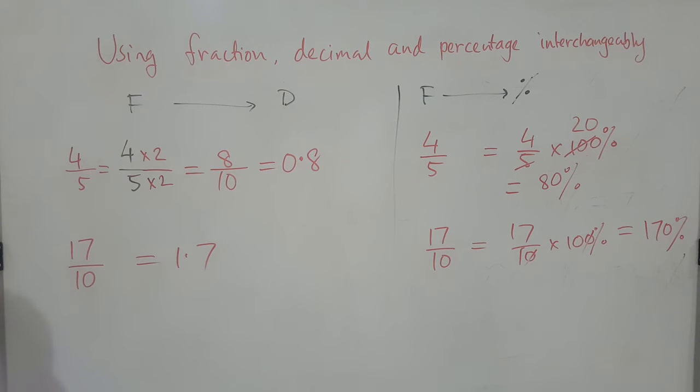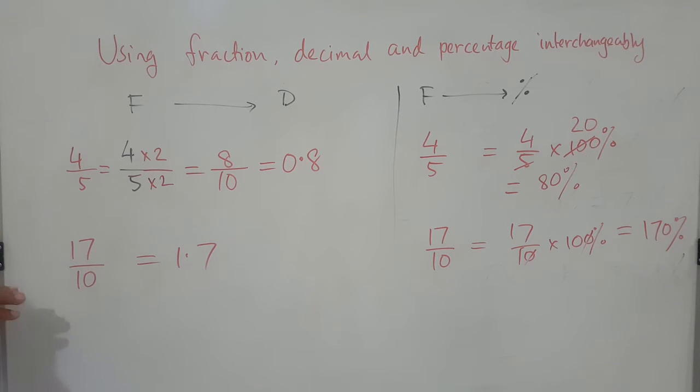Now if the question is, you are not getting 10 or 5, then it is not always easy. Let's say we have 8 over 3, so you cannot make 10 or 100, right. So in that case, you have to do the long division to get the decimal.